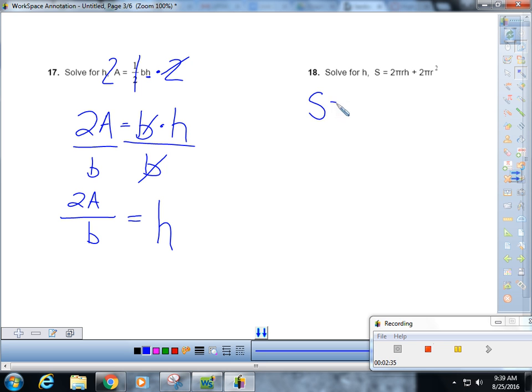Okay. Solving it for h. So the first thing I need to do is get rid of this plus. So I'm going to subtract 2 pi r squared from both sides.